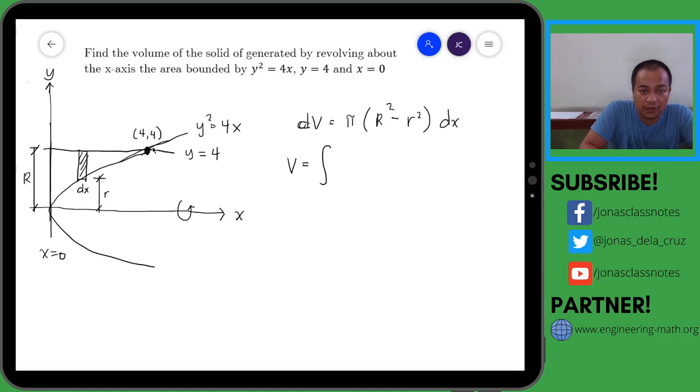So 4 squared equals 4x, 4 squared is 16 divided by 4, so this point is actually 4. So we are going to pass this rectangular element from x equals 0 to x equals 4. So this is from 0 to 4, and then pi, and then what is the outer radius? The outer radius is actually y equals 4, so that is 4 squared minus the inner radius, which is this one, is actually the parabola.